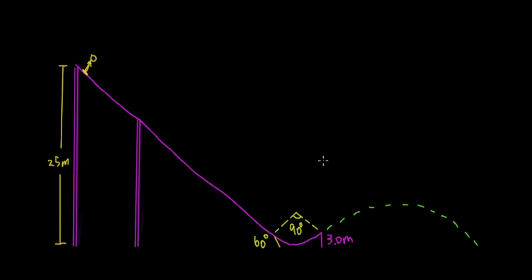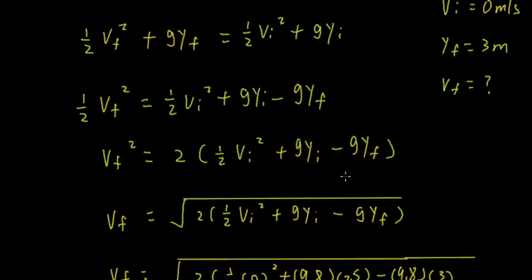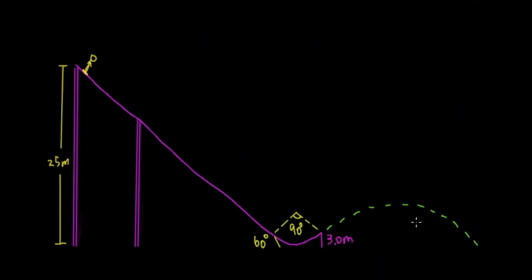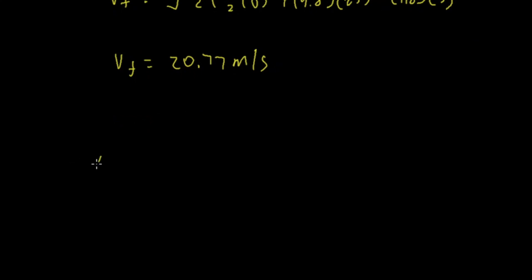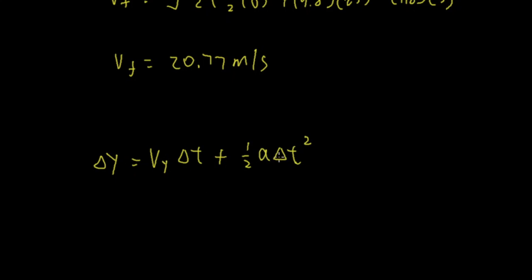Now to solve for the horizontal distance of the touchdown point, we use the kinematic equation for projectile motion. She leaves at a height of 3 meters and lands at 0 meters, so the change in height is negative 3 meters. The motion looks like a parabola, so we use: Δy = v_y × Δt + half × acceleration × Δt². Acceleration is negative 9.8 m/s² downward due to gravity.